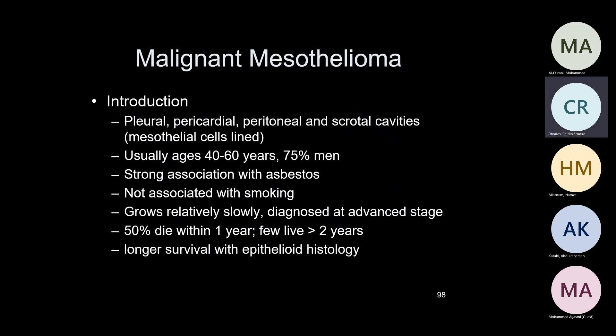Malignant mesothelioma can arise from the pleura, pericardium, or any cavities lined by mesothelial cells — peritoneal cavity, scrotal sac, and so forth. Usually in patients in their 60s and 70s with a history of working in mines or asbestos exposure. Board questions: malignant mesothelioma is not associated with smoking — it's a trick question. If you make a diagnosis of malignant mesothelioma, the patient has about one to two years to live.